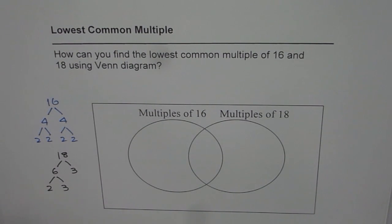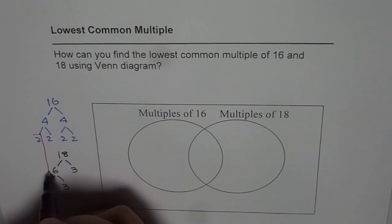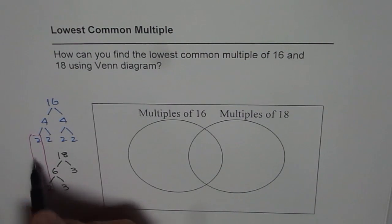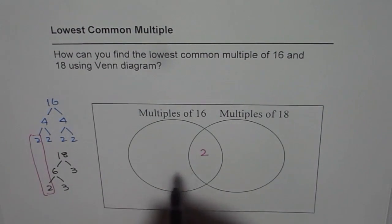Now, which ones are common? We have one 2 that is common. I think that is it. So while writing, we can write this common factor here in the center. So this 2 is common to both.